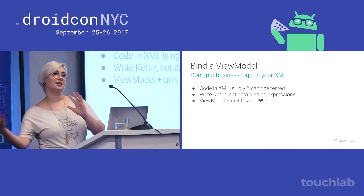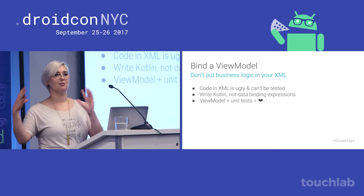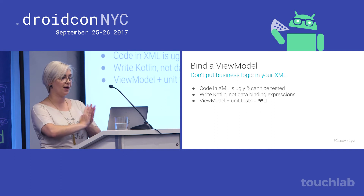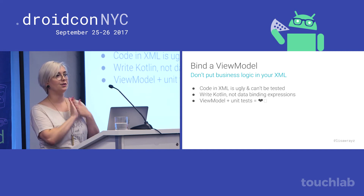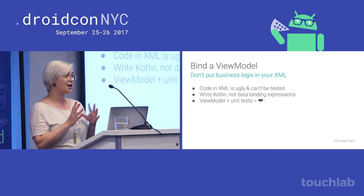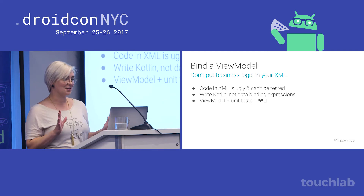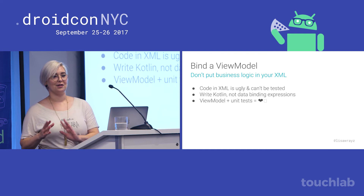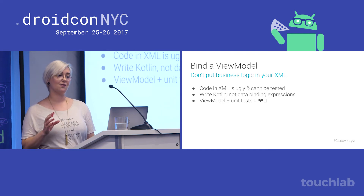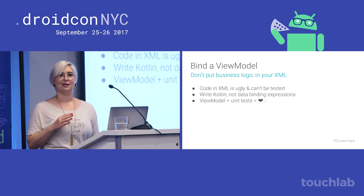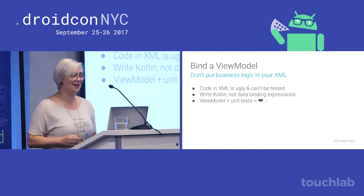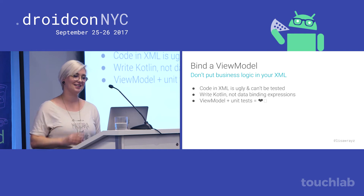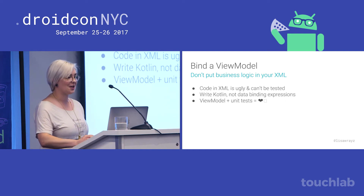It's fine to bind the simplest of views and models together if you just need to stick them together with no processing. But the minute you start writing logic, use a view model. I'm not here to sell you an MVVM architecture, and I honestly don't care what you do — but data binding and view models are BFFs. In your view model, you can write beautiful Kotlin instead. Let's see what that looks like.